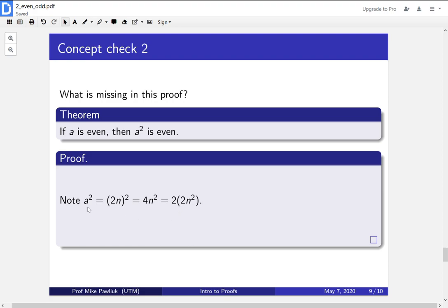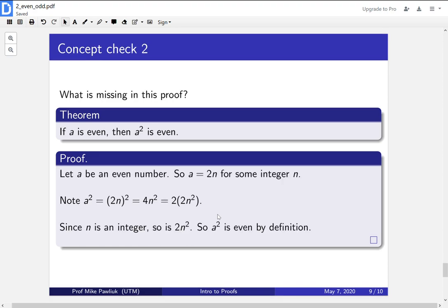Rather than let the reader misinterpret you, why don't we just add it for them? So let's include the definition of a equals 2n. We'll start off by including our assumptions: let a be an even number, so a is 2n for some integer n. And we also include the conclusion. This is now a complete proof.